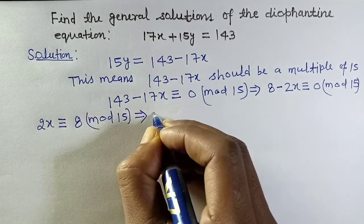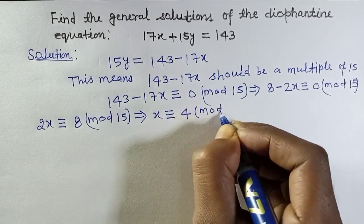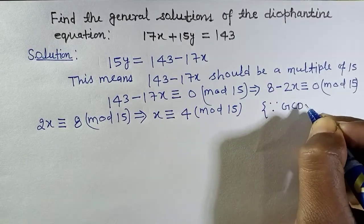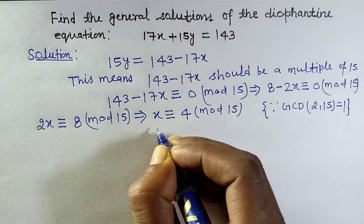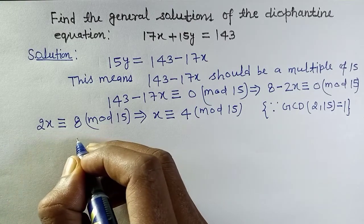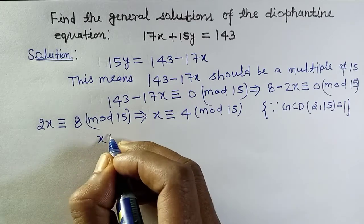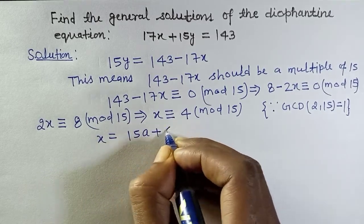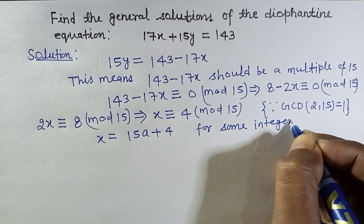So we can write this equation as 2x is congruent to 8 mod 15. This implies x is congruent to 4 mod 15, because the GCD of 2 and 15 is equal to 1. So we can divide the equation by 2.